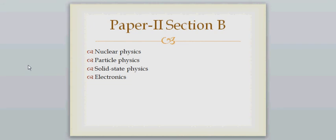Paper 2 Section B deals with nuclear physics, particle physics, solid state physics, and electronics. These topics are more theoretical in nature — you won't find many numerical problems in nuclear physics and particle physics. However, if you look at the question paper, you will find that in 90% of cases they ask problems, not theoretical questions. So our primary focus in Section B will be to find various problems related to these topics and solve them, as solving more and more problems gives us the confidence to write the paper.